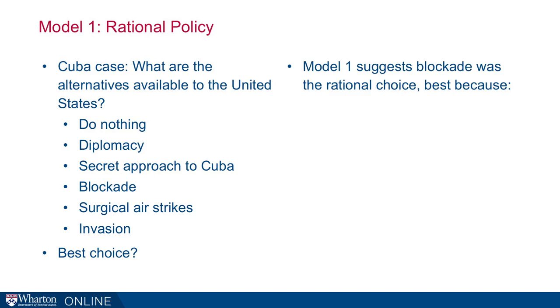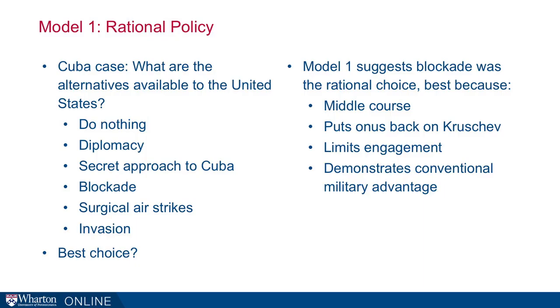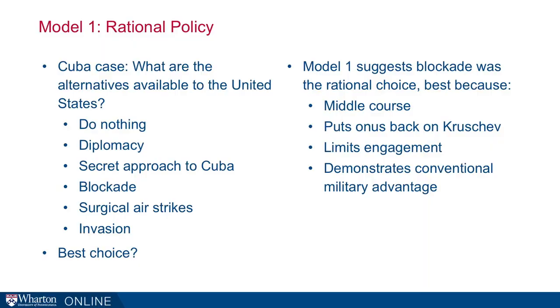What does the rational model say about what we observe? It suggests the blockade was the rational choice — the middle course of action, not as extreme as either diplomacy or full military intervention. It put the onus back on Khrushchev, returning the burden of choice to him. It limited engagement — enough to show seriousness but not a full-scale commitment. And importantly, it showed the US military advantage, especially in this region, sending an important signal to the Soviet Union.